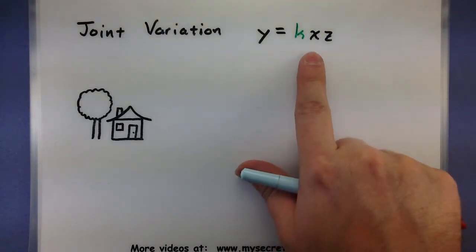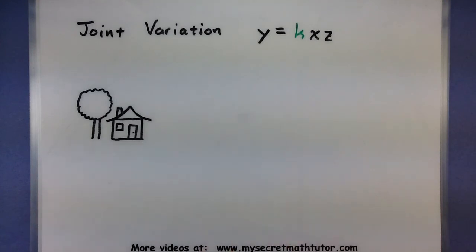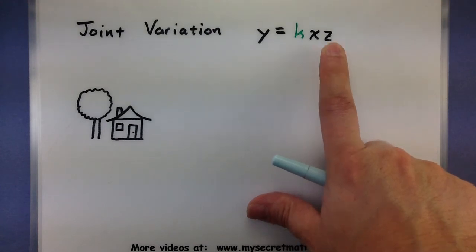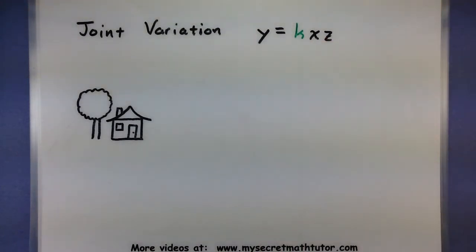So as my square footage goes up, then I'd also expect probably the cost of the house to go up as well. And same with the number of rooms. As the number of rooms goes up, then yeah, that'll probably make the cost go up as well. So again, it works a lot like our direct variation, we simply have more variables.